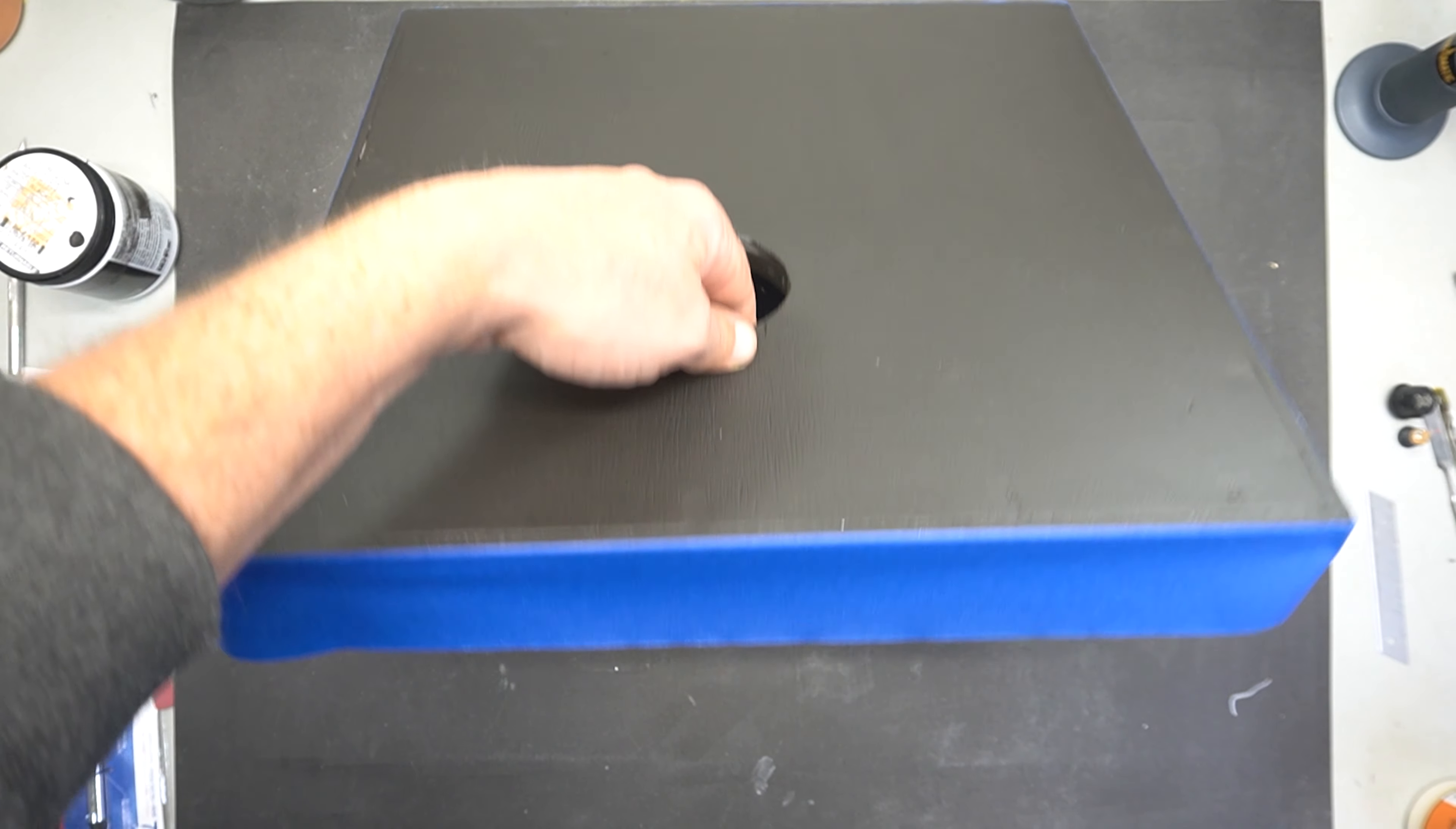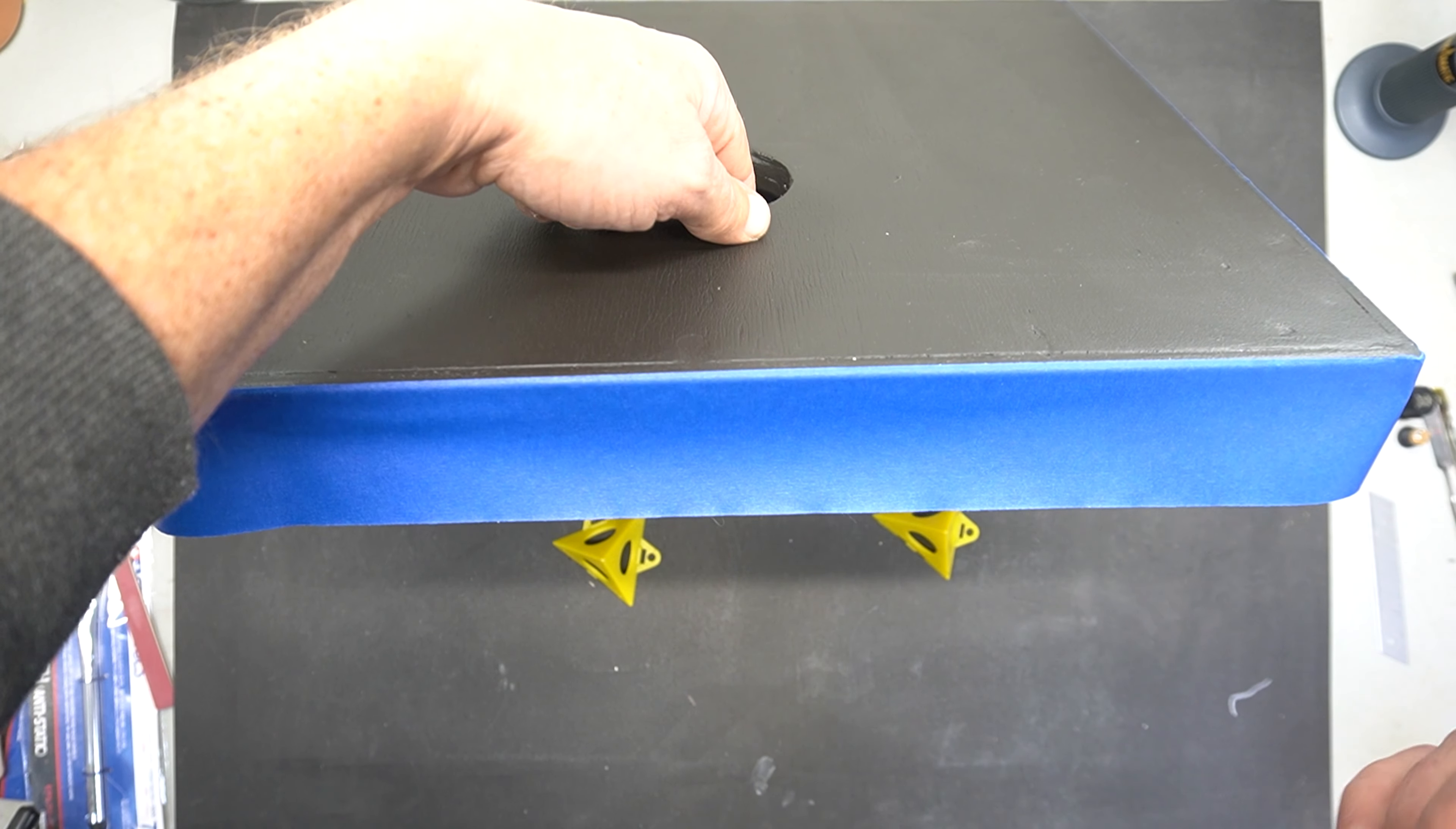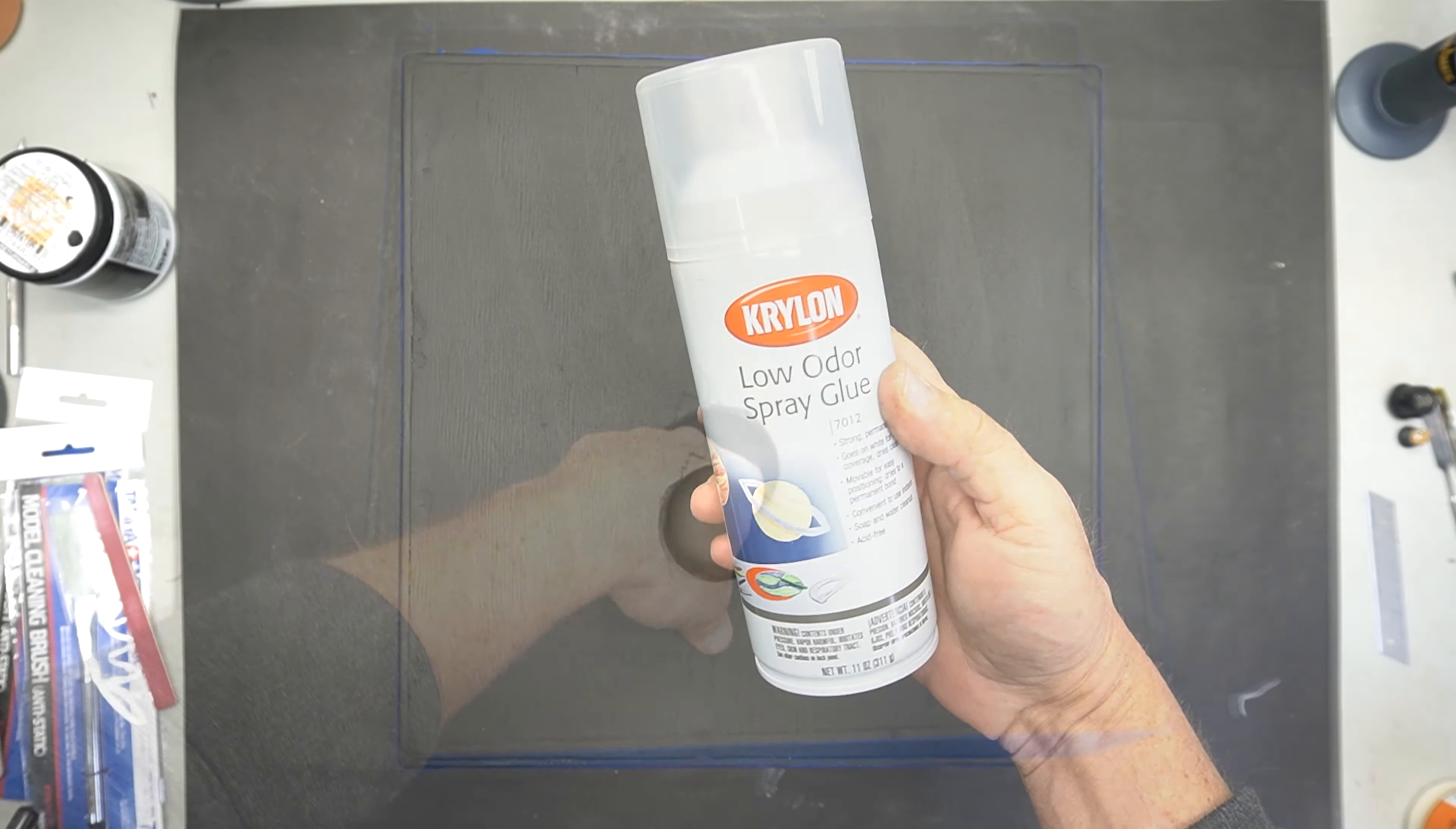And of course, if I did the sides and the top, I'm going to do the bottom. I'm not going to leave any parts off and I'm also going to get inside that hole to make sure everything is covered in black.